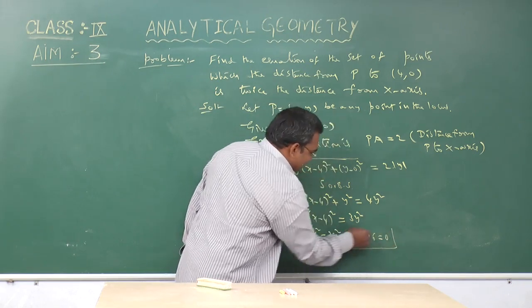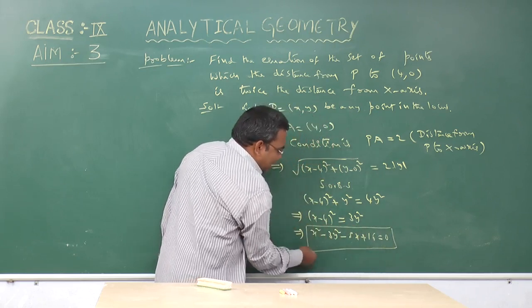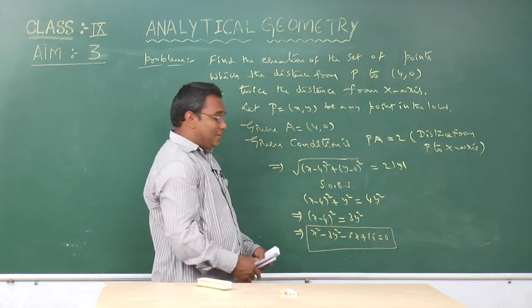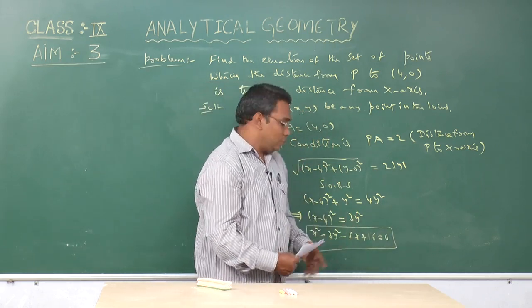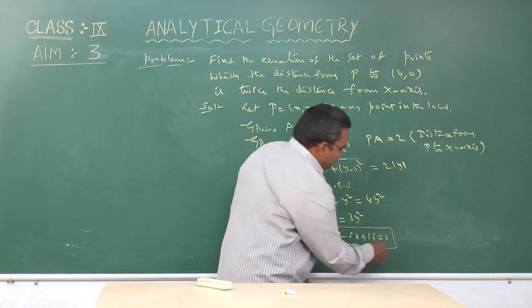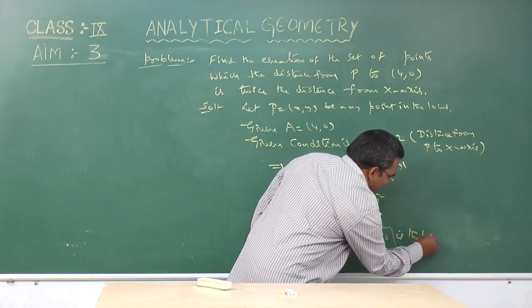Therefore, x² - 3y² - 8x + 16 = 0 is the required locus, that is the locus of P.